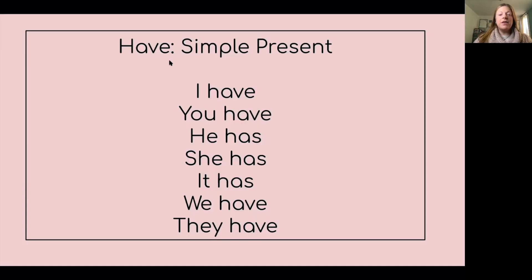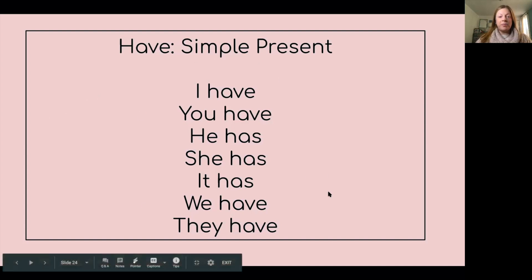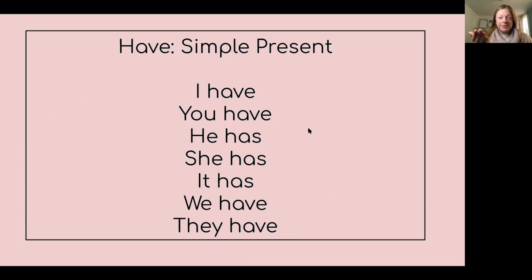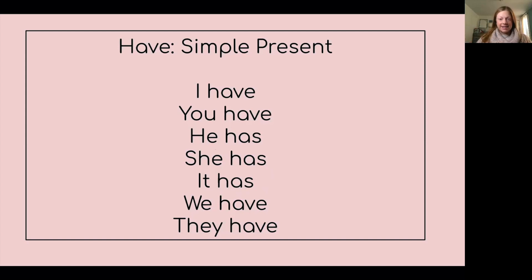Let's take a look at the conjugation for the verb 'have' in the simple present: I have, you have, he has, she has, it has, we have, they have. Notice that for he, she, and it in the simple present, the verb gets an S — so instead of 'have,' it's 'has.' But I have, you have, we have, they have.